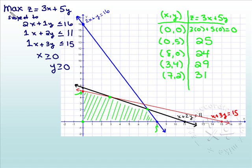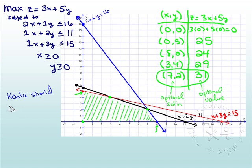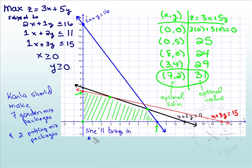Now let's go back to the objective function we're trying to maximize. And notice we did that right here. (7, 2) is called the optimal solution, and 31 is the optimal value. So what does that mean for this problem? That means that Carla should make 7 garden mix packages and 2 potting mix packages, and the 31 means she'll bring in $31 in revenue.